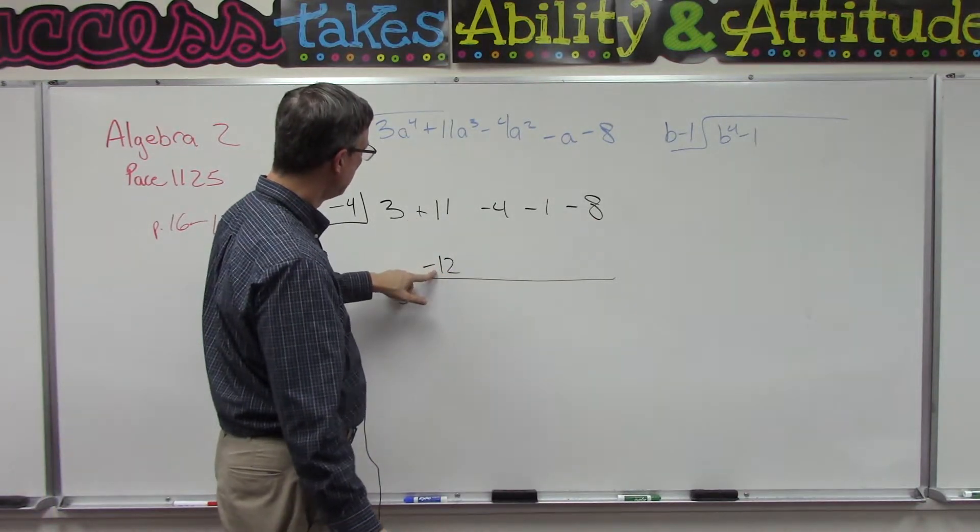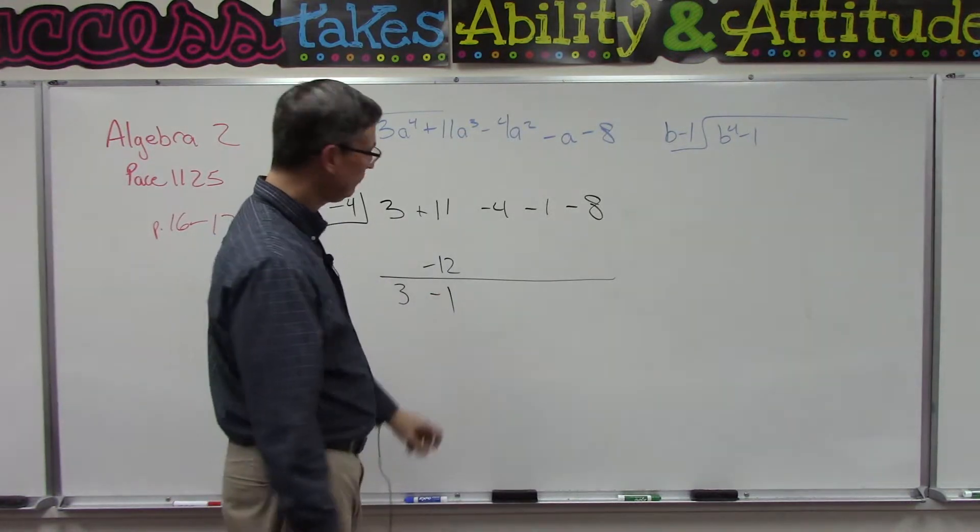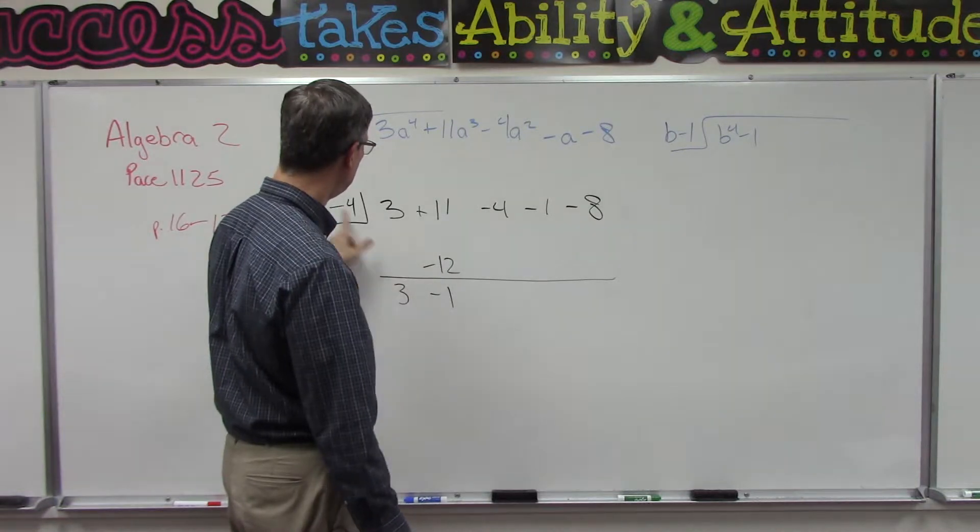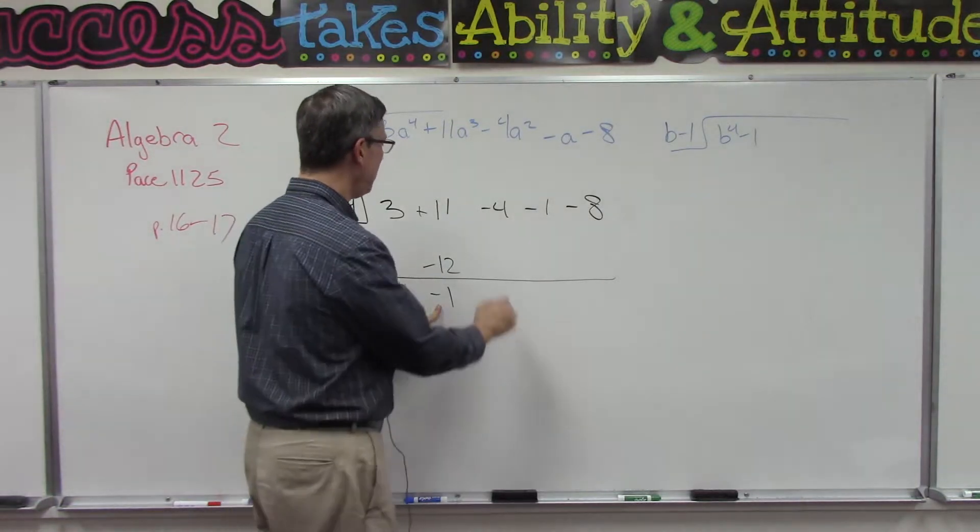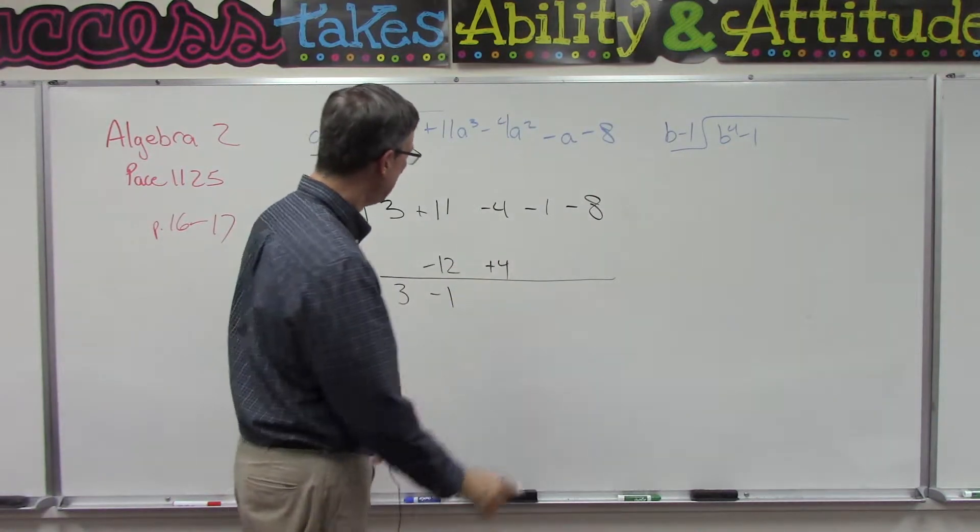Now we're going to take the negative 1 times negative 4, multiply and we get positive 4. Now we add and that becomes 0.